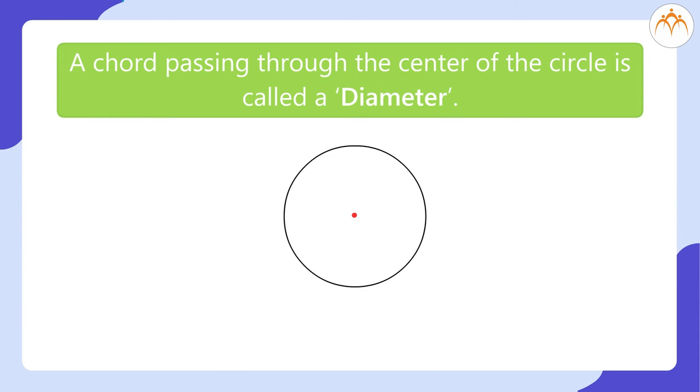Diameter. A chord passing through the center of the circle is called a diameter. Draw a line through the center of the circle. Name it as AB. Name the center as P. Remember that chord AB should pass through the center P. So, chord AB is a diameter of the circle.